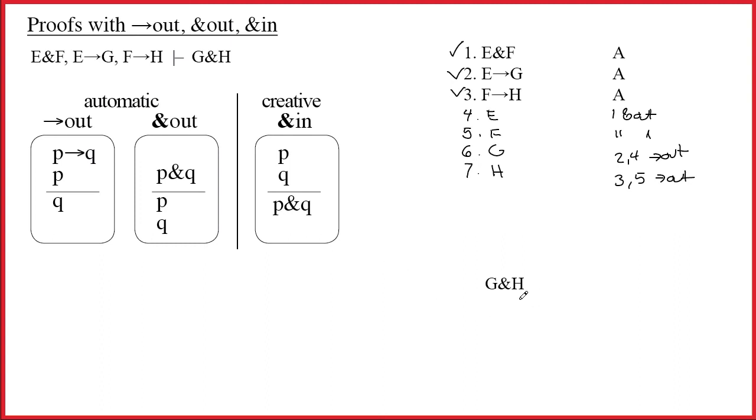Well, to build G and H, obviously you'd have to have a G on one line and H on another. We look up above. Yeah, there's a G and an H. So we're done.